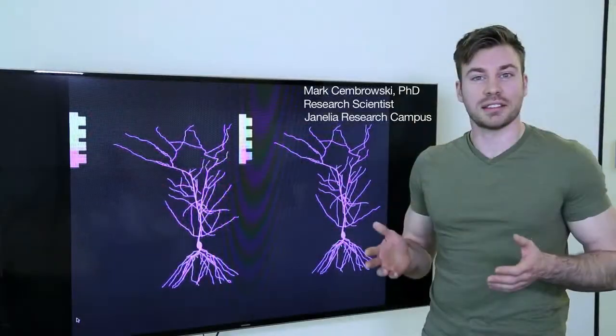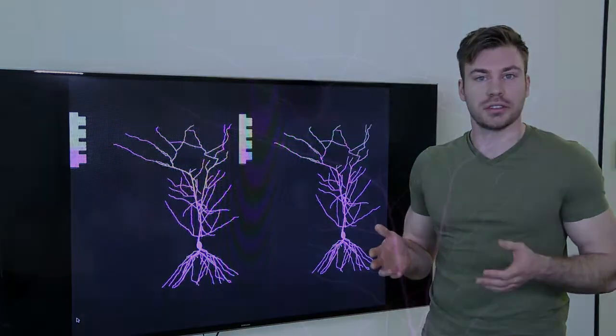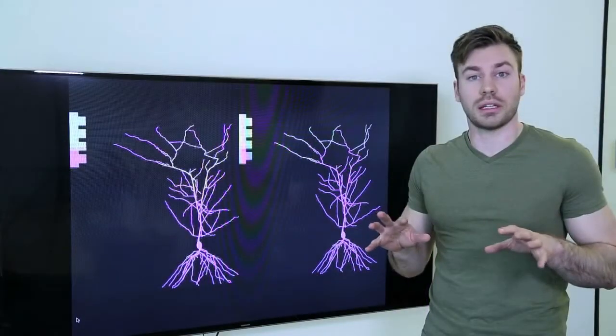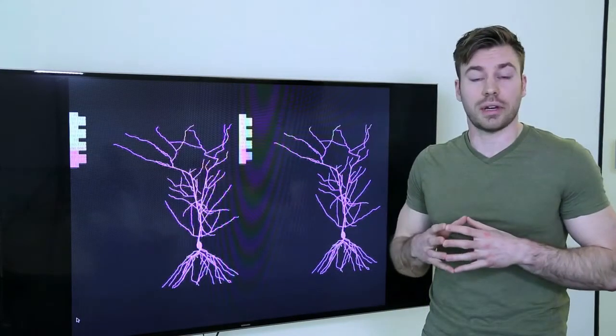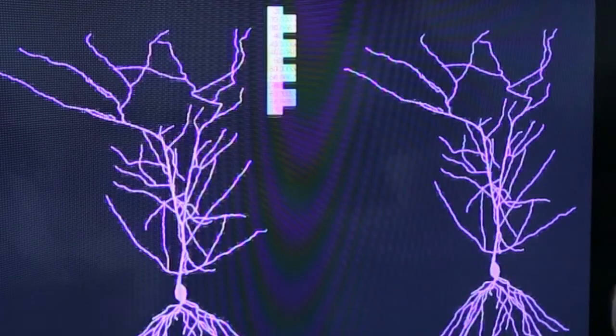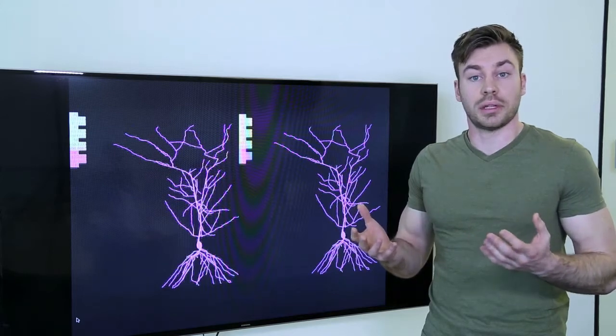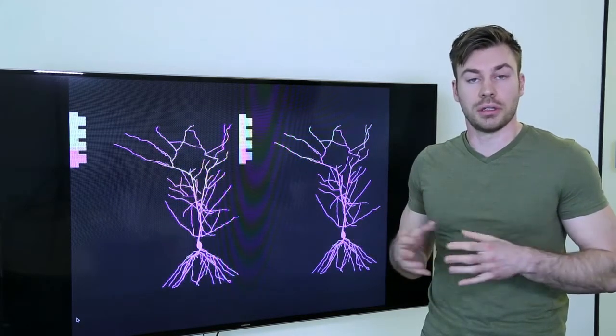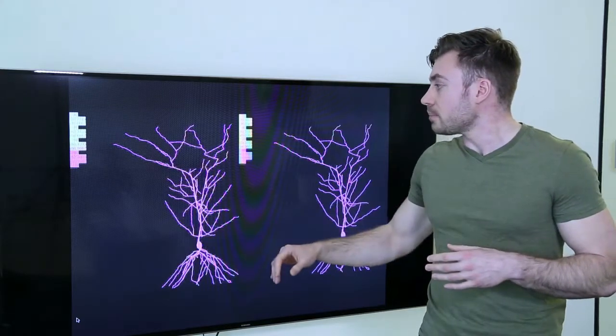Eric's data really nicely attests to the fact that different types of inhibitory interneurons project and target different locations within the CA1 pyramidal cell dendrites. We've got a lot of really nice tools that we can use to investigate the effect of cell type specific inhibition. At left and right shown here are two models where we have this excitation, but this excitation is occurring in conjunction with two different types of inhibition. On the left hand side here is inhibition that Eric has observed that's primarily targeting the distal dendrites shown here.